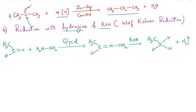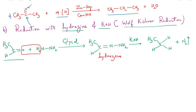The second complete reduction method is the Wolff-Kishner reduction. The aldehyde or ketone is treated with hydrazine (NH2NH2) in the presence of ethylene glycol; a molecule of water is lost to give the hydrazone derivative — for example, acetaldehyde hydrazone. This hydrazone, when treated with KOH, loses nitrogen gas and forms a hydrocarbon: ethane from acetaldehyde hydrazone.